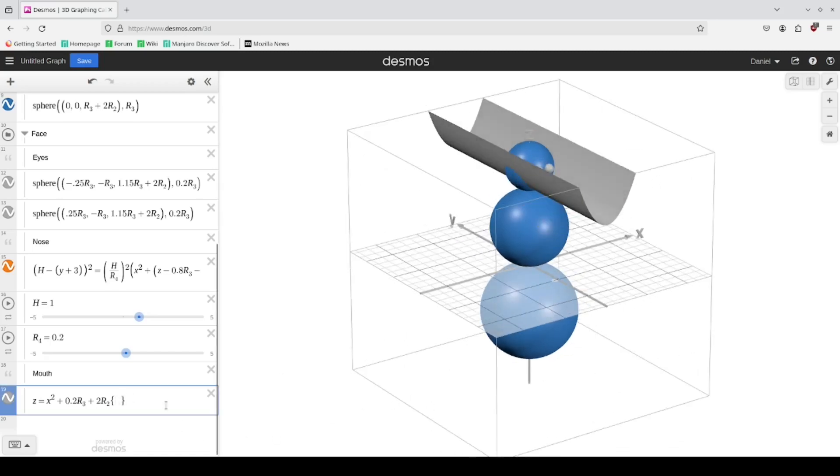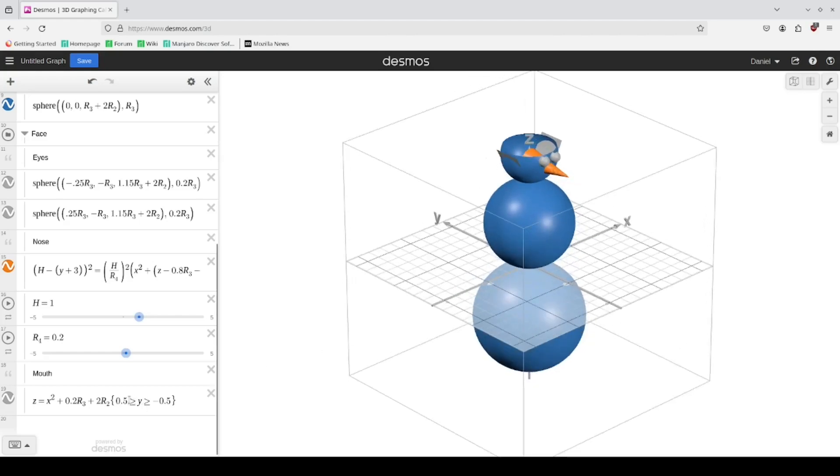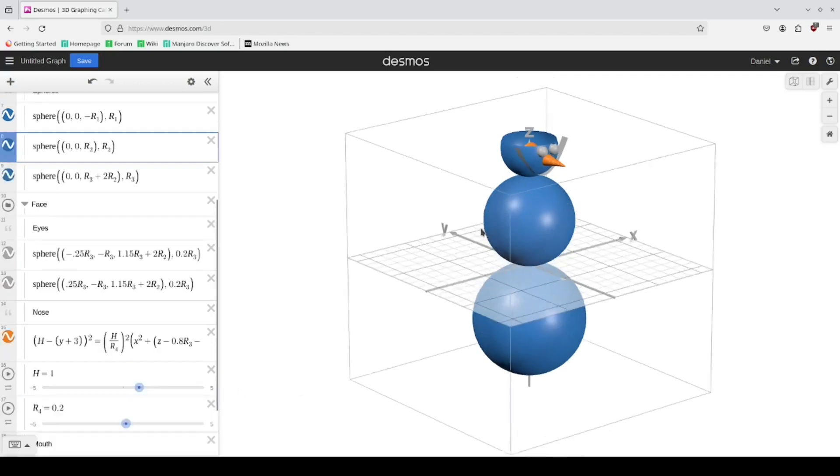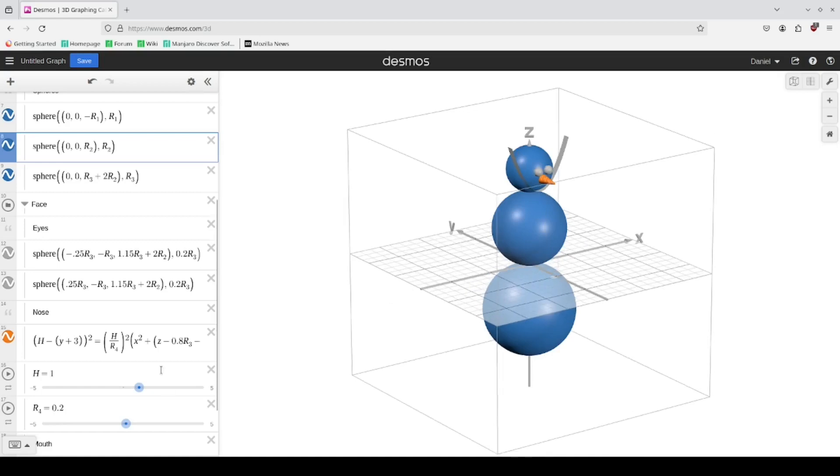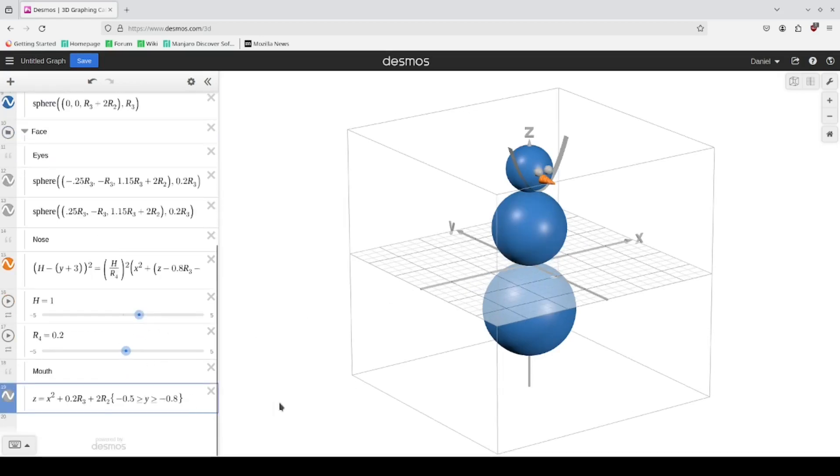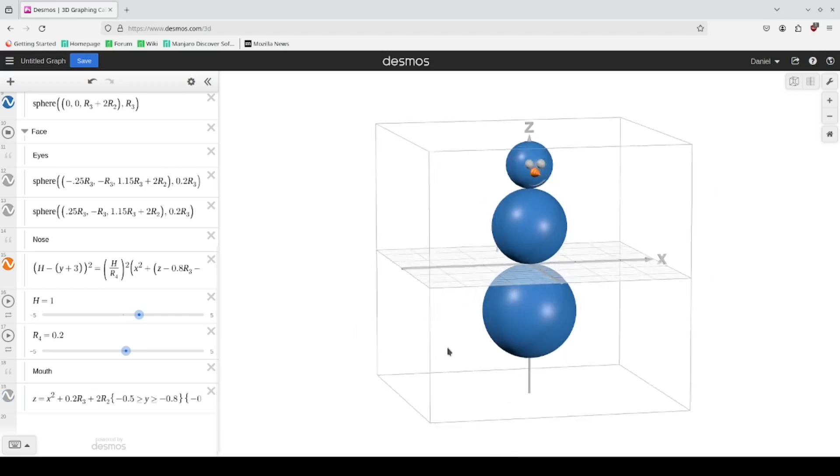I went with 0.5 is greater than y is greater than negative 0.5. Essentially I'm trying to start it off not entirely starting at zero, but it is somewhat snugged into the head. And then for the x I think I went minus 0.5 to positive 0.5.